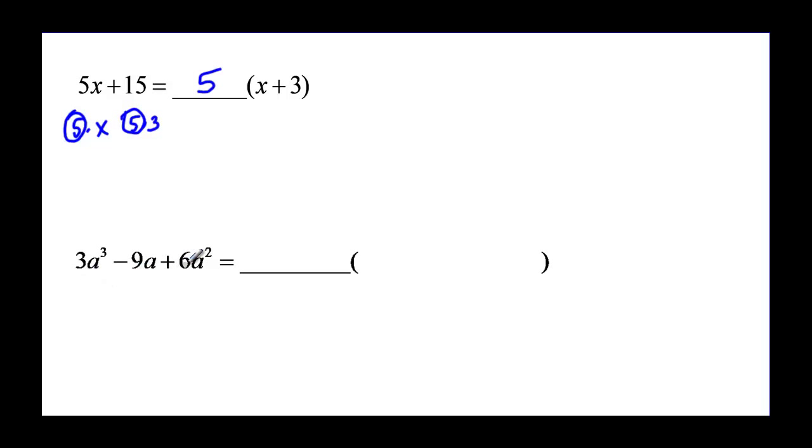3, 9, and 6. They're going to have 3 in common. And then A cubed A and A squared, we want the smallest exponent, so we just want A. So now we ask ourselves, we have a factor of 3 and an A. And I have 3A, but I need two more factors of A, so I have to put those inside.